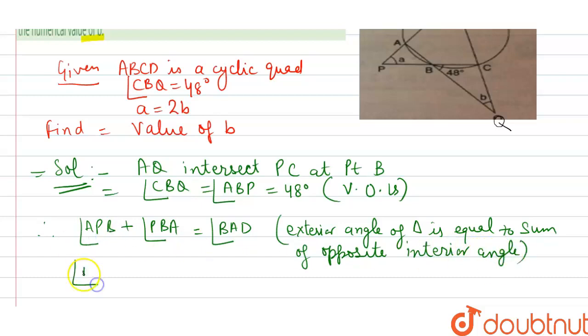Therefore, angle BAD - what is the value of APB? Angle APB is A, and angle PBA is 48. So here is the first equation.